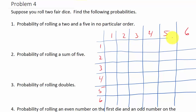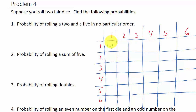Writing out the sample space: from the first die we can get a 1 paired with a 1 on the second die, or a 2 on the first and a 1 on the second. So we write 1-1, 1-2, 1-3, 1-4, 1-5, and 1-6 for the first column.